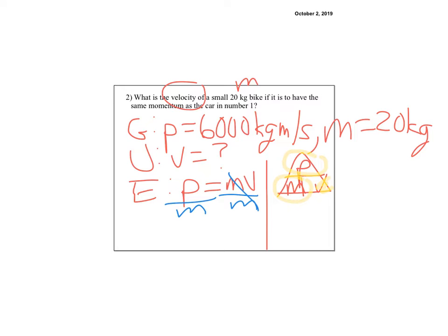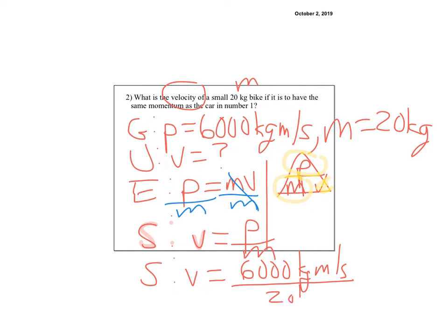So that works. So then we can say that v is equal to p over m, and then the solution, v is equal to 6,000 kilograms meters per second over 20 kilograms. And then there's always nice, you can do the double check with your units, and I say, oh, yeah, kilograms cancel the kilograms, and I'm left with meters per second.